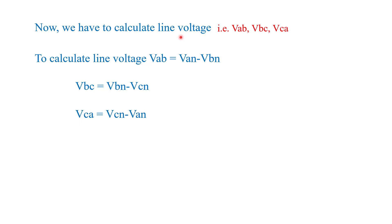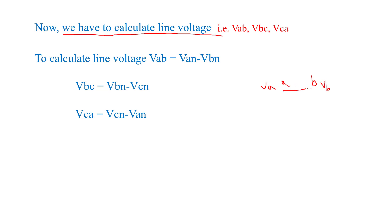In that video I explain how to calculate phase voltage, after which you will easily calculate the line voltage. In this video, I will explain what line voltage is and how we calculate line voltage with the help of phase voltage. Consider point A and point B: if the voltage across point A is VA and the voltage across point B is VB, then the potential difference between these two points is called the line voltage.